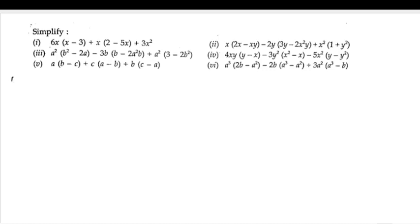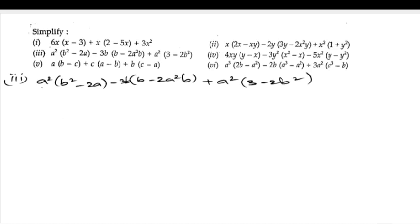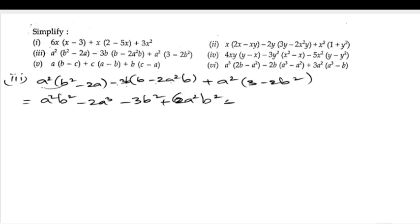Now let us solve the third bit: a²(b² - 2a) - (-3b)(b - 2a²b) + a²(3 - 2b²). Expanding: a² into b² is a²b², minus 2a times a² is minus 2a³. Then minus 3b into b is minus b², and minus into minus is plus, giving 6a²b². Finally, a² into 3 is 3a², and plus into minus gives minus 2a²b².